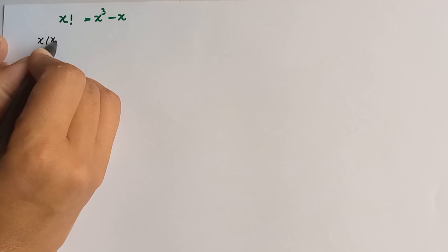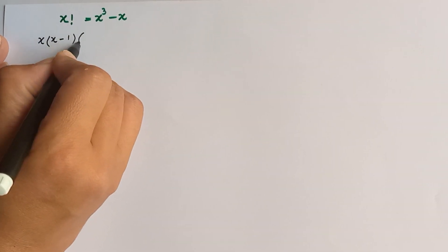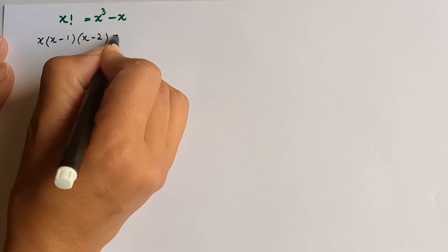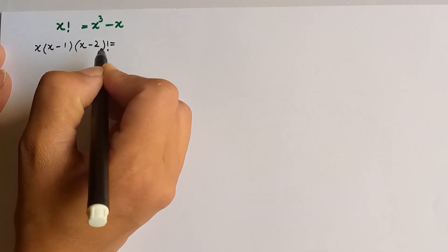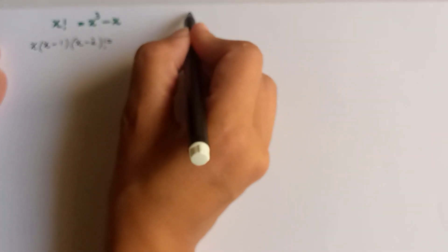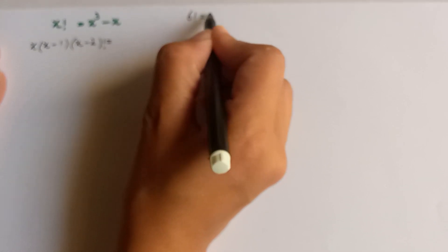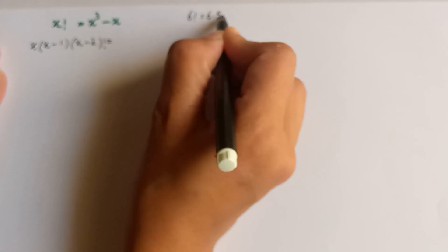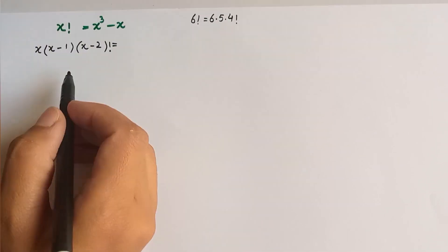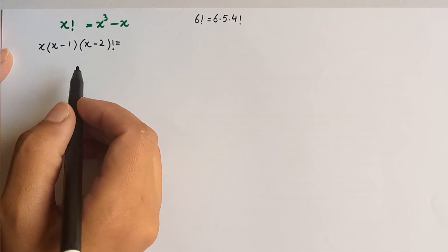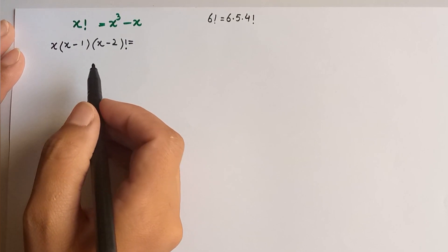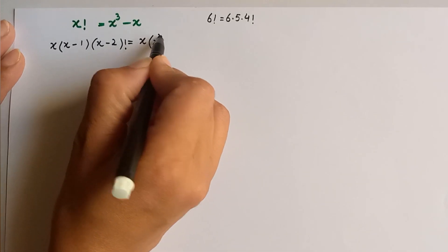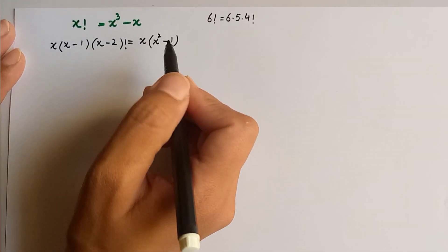We rewrite x factorial as x times (x minus 1) times (x minus 2) factorial — just like 6 factorial equals 6 times 5 times 4 factorial. On the right hand side we take x as common, and we are left with x squared minus 1 inside the bracket.